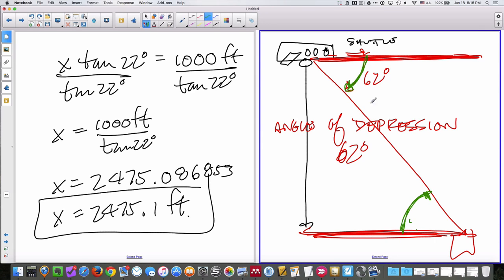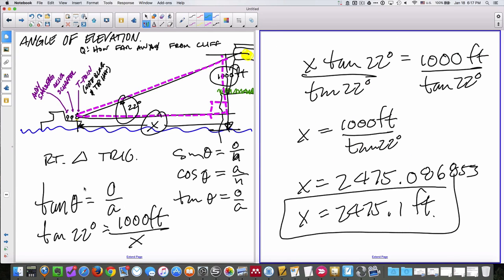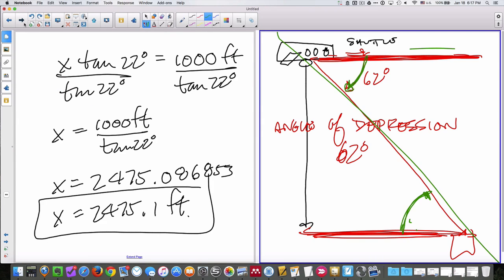This 62 degrees is the same as the angle of elevation, 62 degrees. Why? Because they're alternate interior angles with a transversal through parallel lines. So that goes back to geometry. So angle of depression and angle of elevation, they're the same idea, just applied differently.